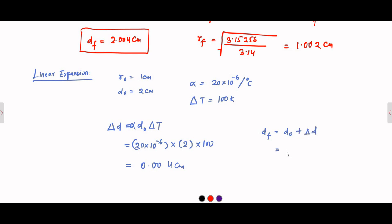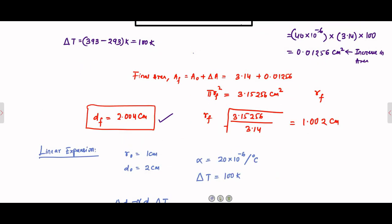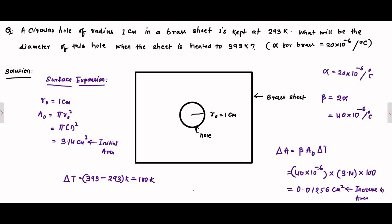The final diameter equals the initial diameter plus the increase in diameter, which is 2 plus 0.004, equal to 2.004 centimeter. This confirms the same result as the surface expansion approach — a final diameter of 2.004 centimeter. You can use whichever method you prefer, but the linear expansion approach is recommended as it saves a lot of time. The key logic is that when the brass sheet expands, the hole on it also expands along with it.